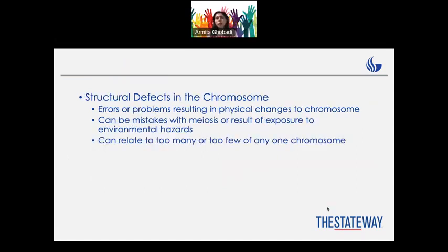This section is about errors — specifically physical changes in chromosomes. This is most often based on the environment and the situation. For example, there might be hazards in the environment, and if a mother is exposed to them during pregnancy, it can cause disorders in the child.